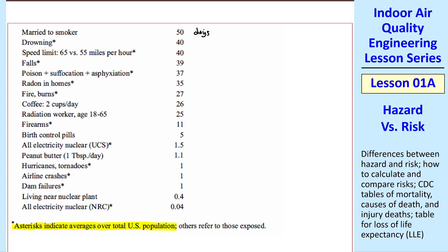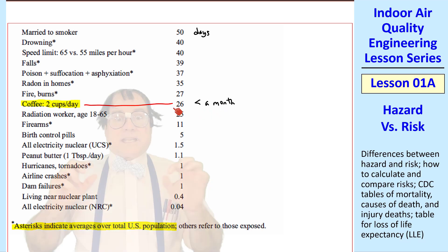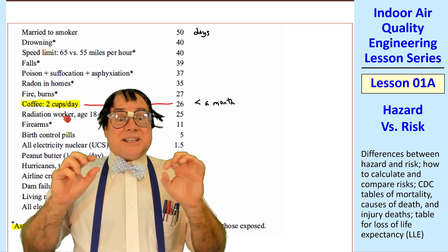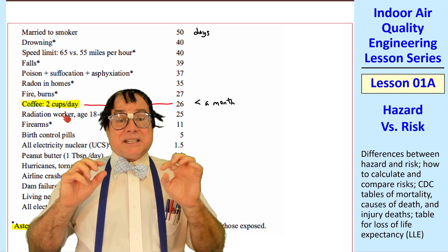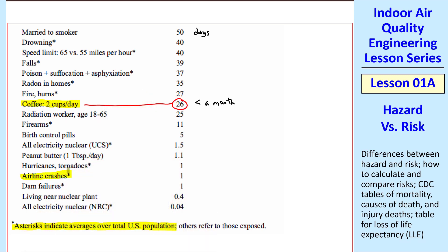Here's the bottom of the table, where again the values are days of loss of life expectancy. Drinking 2 cups of coffee per day leads to a loss of 26 days — about a month. A final example is airline crashes: the average loss of life expectancy is only one day, which is totally negligible. So the risk of flying in a commercial airplane is negligibly small.